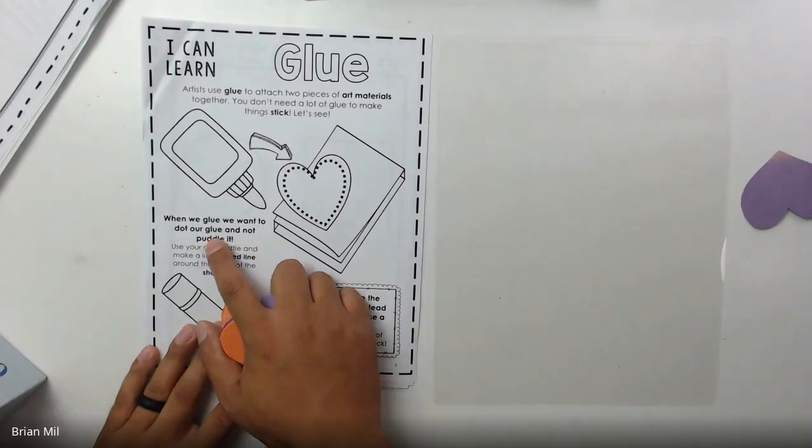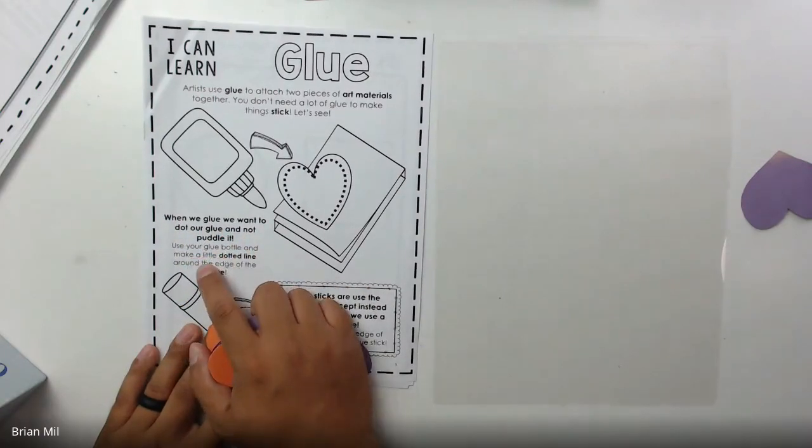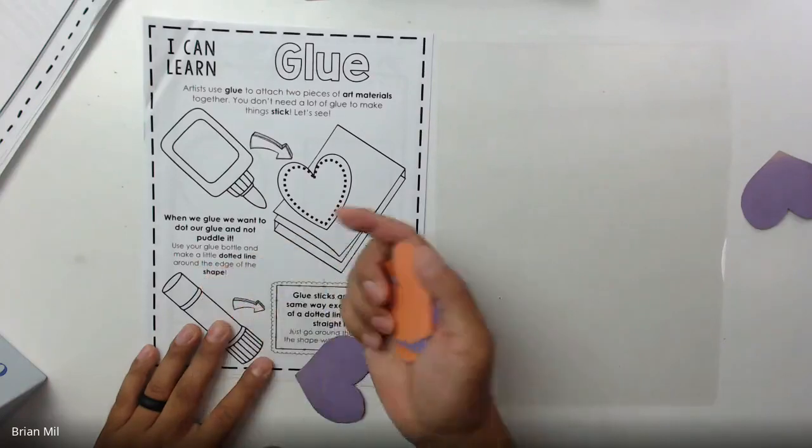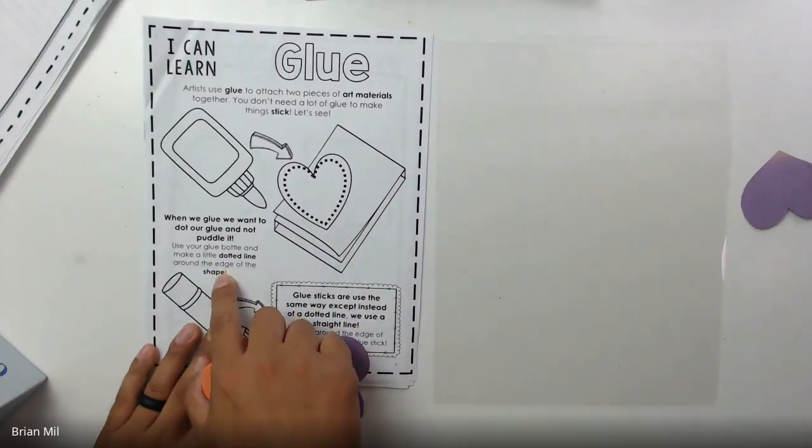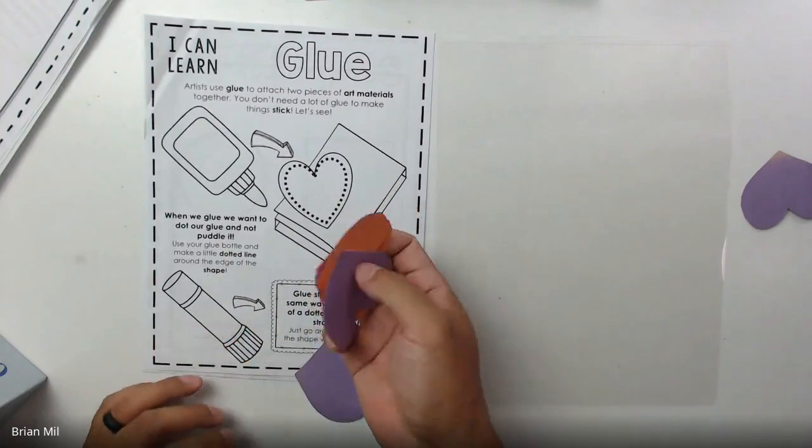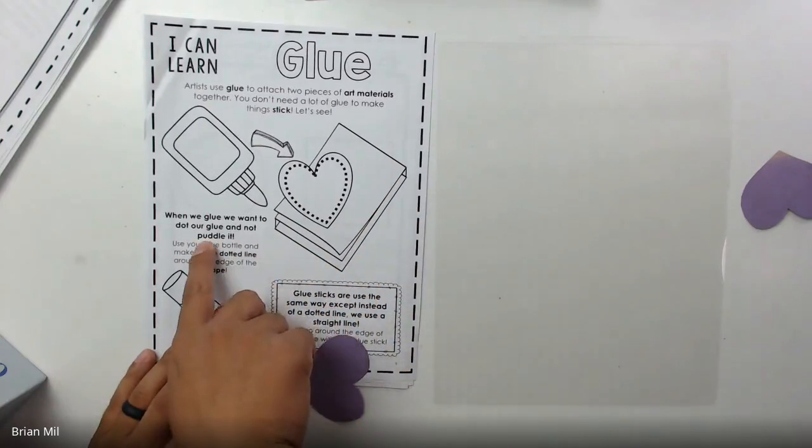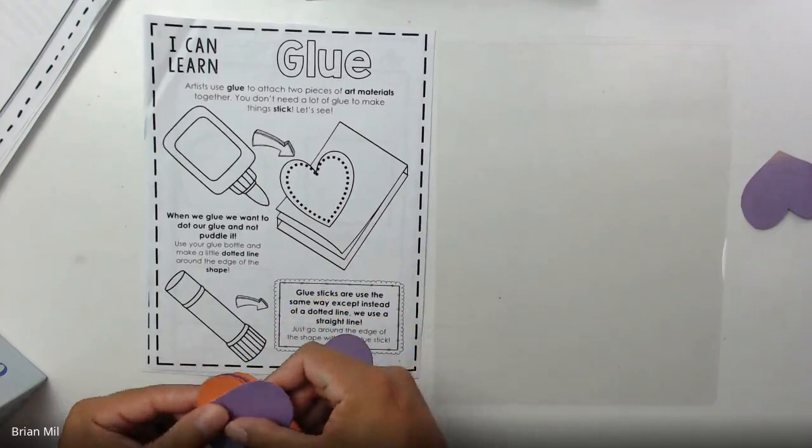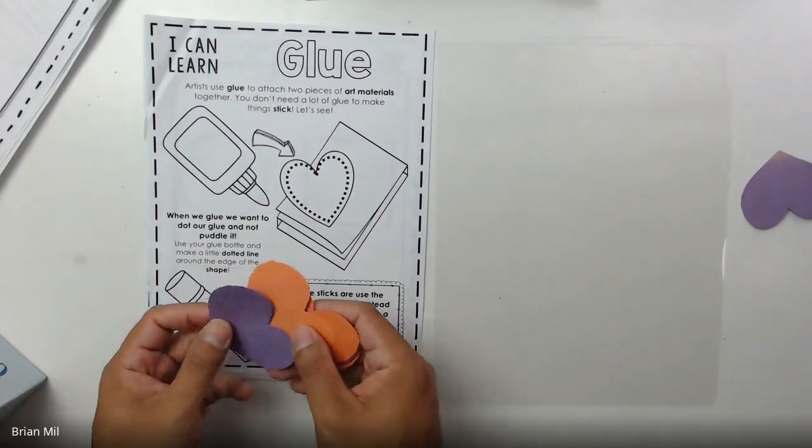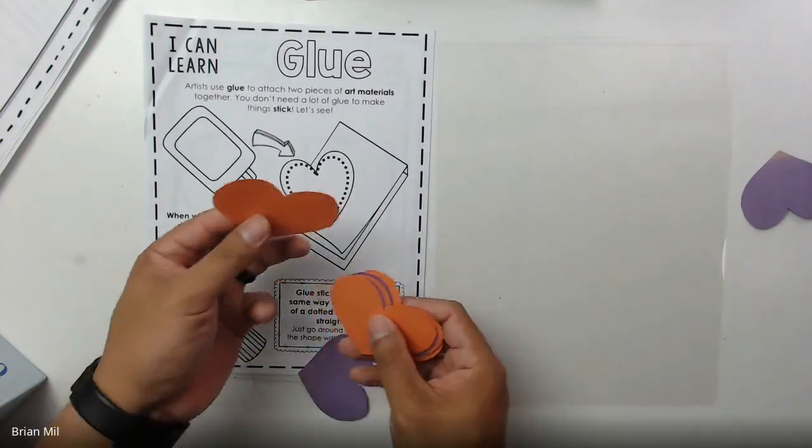Let me read this next part real quick. It says when we glue, we want to dot our glue and not puddle it. So use your glue bottle and make a little dotted line around the edge of the shape. We're going to ignore that last part. I'm not going to do that line with glue, but I am going to do at least a little dot and I'm going to do a puddle so you guys can see the difference.